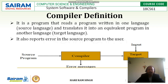Whenever we write a program in a high-level language as a programmer — whether in C, C++, Java, or Python — we write in high-level language. The compiler takes that high-level language and converts it into the target language, also called assembly language or machine language.